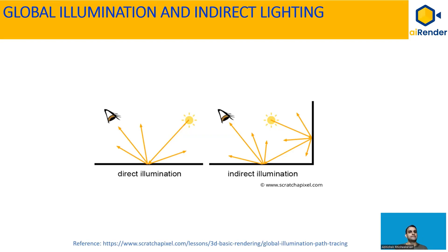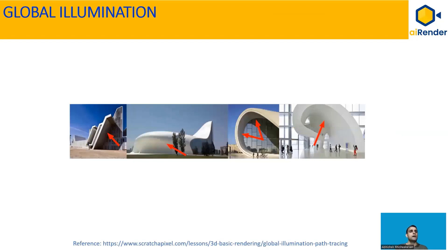Global illumination adds more realistic lighting to 3D scenes. To understand global illumination, let's first see what direct and indirect illumination are. When light rays reflect from an object once before reaching the viewer's eye, it's called direct illumination. But when light rays bounce off from multiple objects before reaching the viewer's eye, it's called indirect illumination. Global illumination involves simulating both these effects. As seen in these images, different parts of a building are illuminated differently — some parts are directly illuminated by sunlight, while others are not exposed directly. But those unexposed parts are not completely black; they have some darker or lighter shades due to indirect illumination, making them good examples of global illumination.